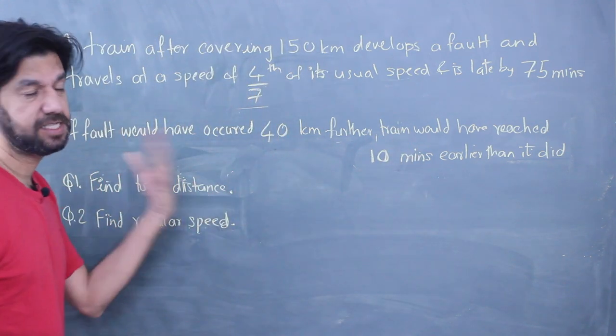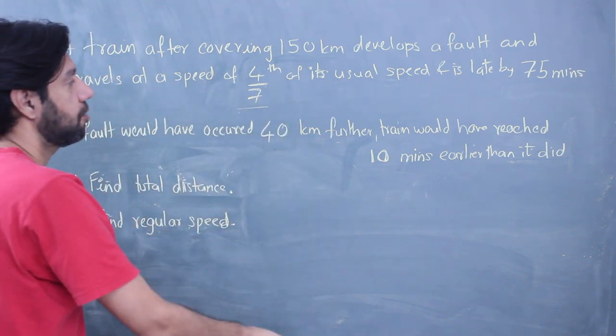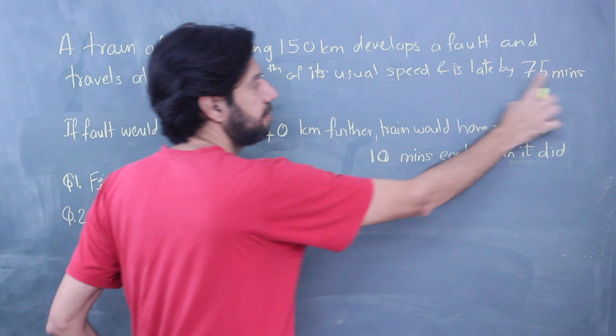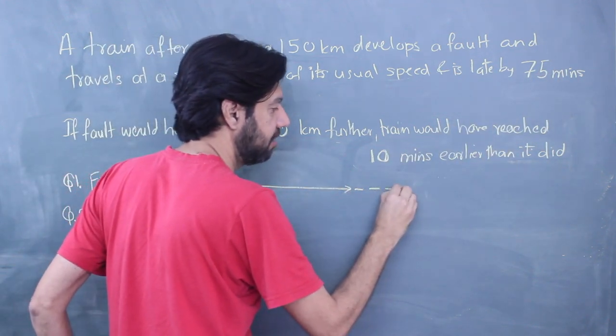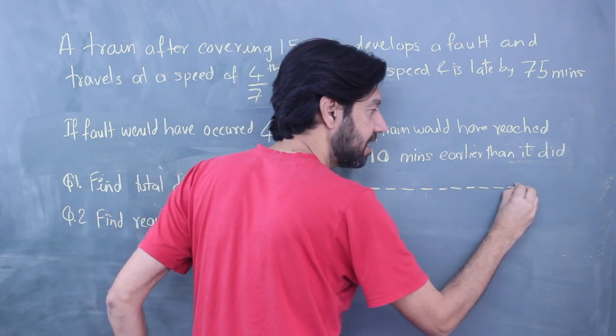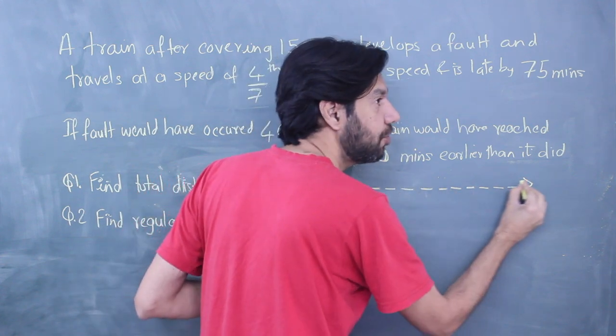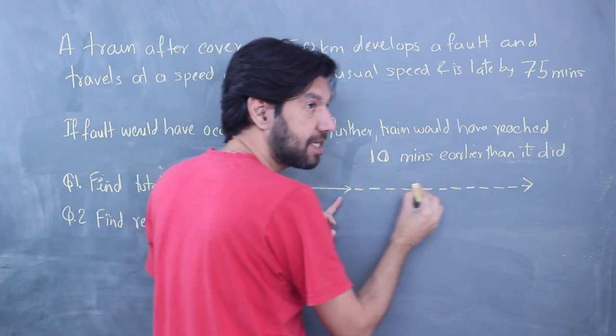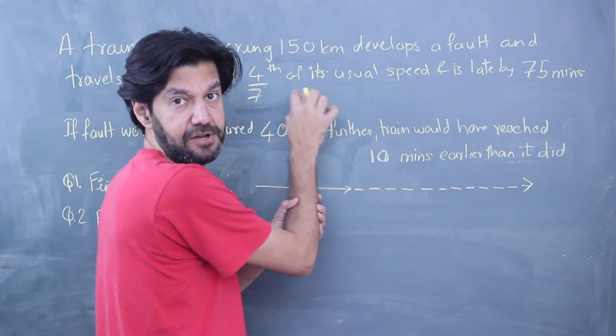However, for me to explain I'll just be jotting down a few points. I hope you have read the question. Speed reduces and because the speed reduces the train is late. The dotted line is where the speed is reducing. As you travel at the reduced speed, you are getting late. The more distance you travel at reduced speed, the more late you become.